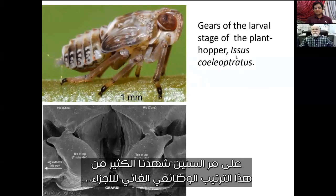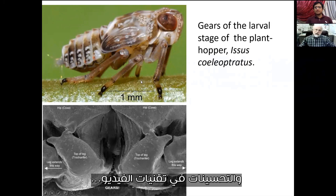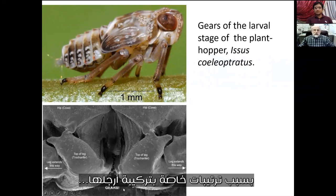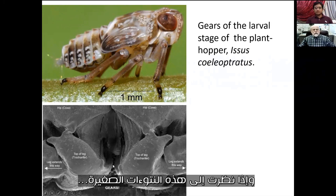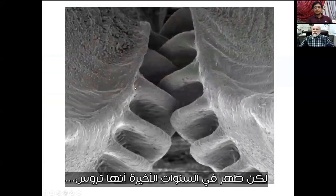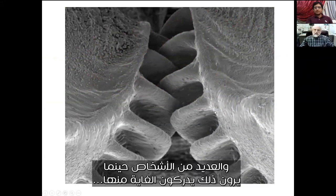For years we've seen lots more of this purposeful arrangement of parts. Here's a nice example — a bug called a plant hopper. Improvements in video techniques have shown that it can leap further than other insects because of an arrangement on its legs. If you look at these little bumps, people couldn't see what they were, but in recent years they were shown to be gears — literally mechanical gears — and most people when they see this realize the purpose behind it.